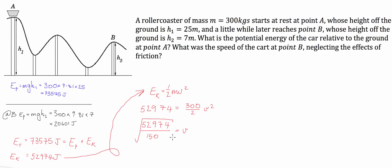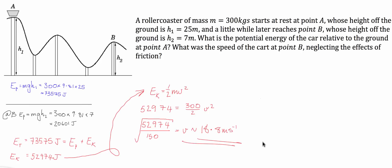We come out with a velocity approximately equal to 18.8 metres per second. The velocity at B is related to the kinetic energy at B, which is the difference between the potential energies at A — where it's stationary — and B, where it's moving. Because energy cannot be created or destroyed, we use the kinetic energy relationship to work backwards and find the velocity. I hope that video helped put it in perspective — I'll see you again next time.